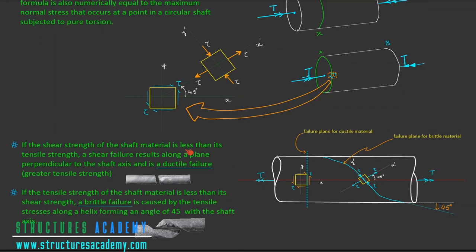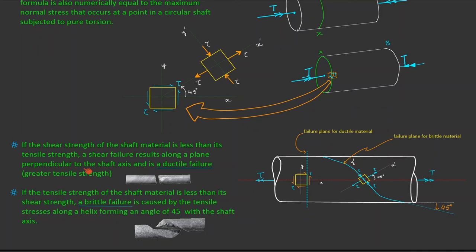If the shear strength of the shaft material is less than its tensile strength, a shear failure results along a plane perpendicular to the shaft axis — a ductile failure — where a shear cut happens between the two segments that come apart. If the tensile strength of the shaft material is less than its shear strength, a brittle failure is caused by tensile stresses along a helix forming an angle of 45 degrees with the shaft axis, as shown by the helical failure pattern in the diagram.